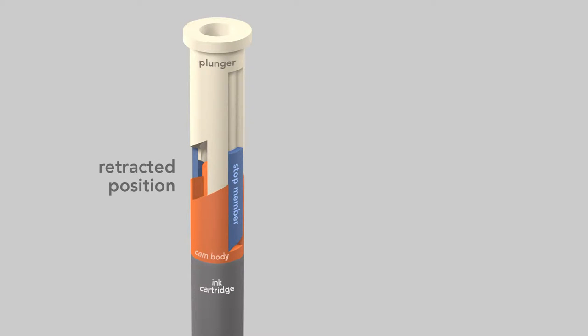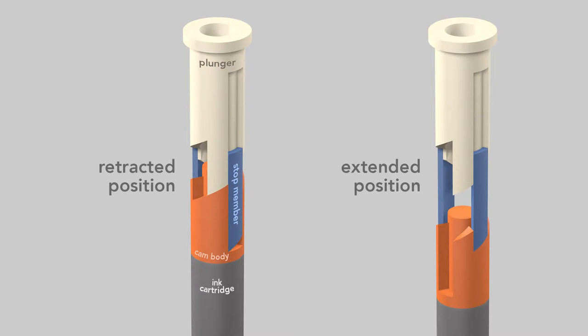The pen can be in either of two positions. The retracted, non-writing position where the tip of the cartridge is inside the barrel, or in the extended, writing position where the cartridge's tip projects from the barrel. To see how the plunger, cam body, and stop members interact, I've broken the cam movements into eight steps.